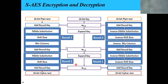For the initial round we need two words, and for each subsequent round we also need two words. Looking at the first round, we need nibble substitution, shift row, mix column, and then add round key. Initially the plain text is XORed with the round key. After XORing the initial key with the plain text, we apply sub-byte transformation — that is, the nibble substitution using substitution boxes — then shift row, mix column, and add round key.